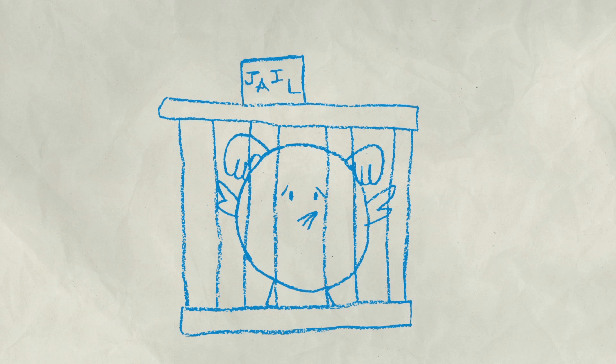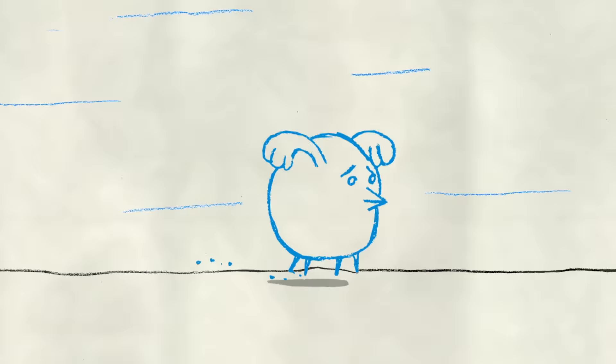But it was a set-up, and Chibi gets sent to jail. But he's too big for jail, so he escapes.